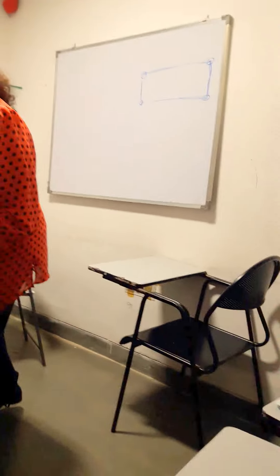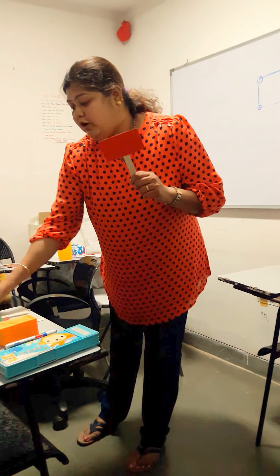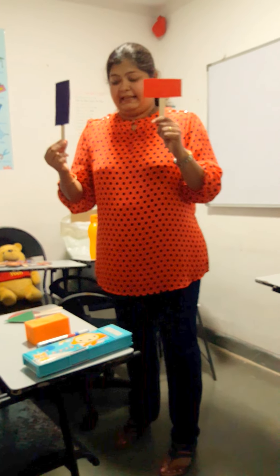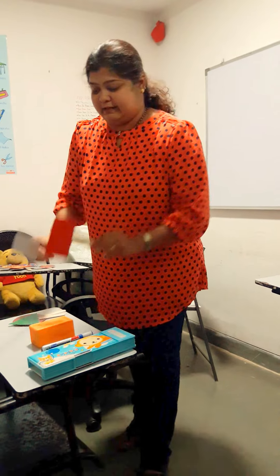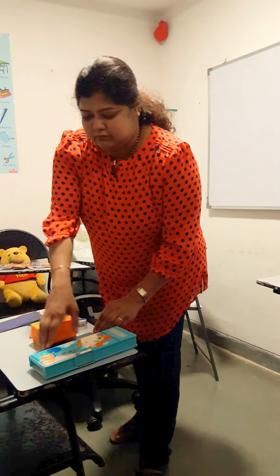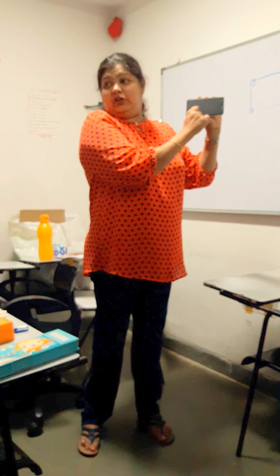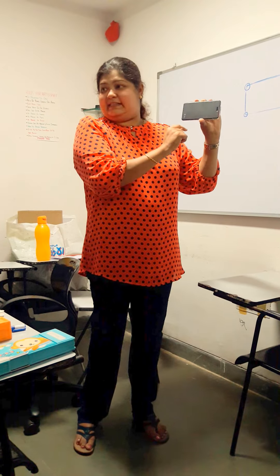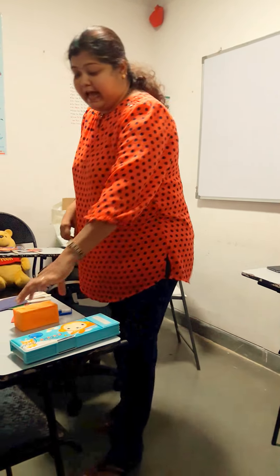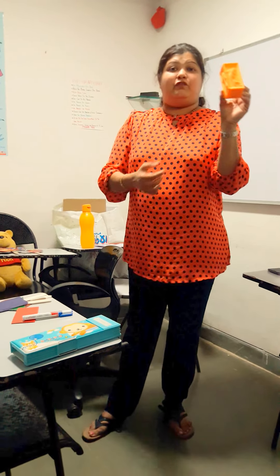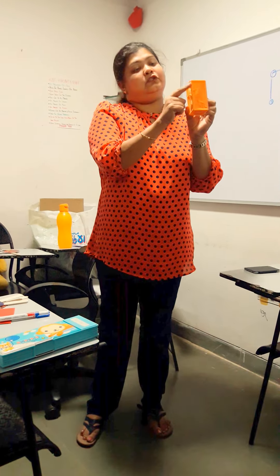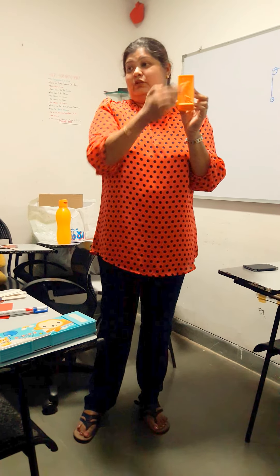A rectangle can be either wide or it can be tall. So there are two types of rectangles. Now let's see what teacher has to show you that looks like a rectangle. This is teacher's mobile. This is in the shape of a rectangle — it's got two long sides and two short sides. We have a playing block in the form of a rectangle, with two long sides and two short sides.